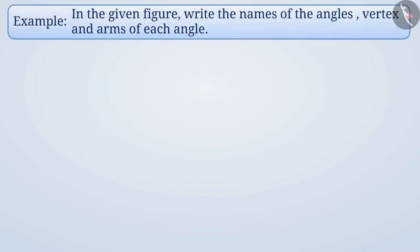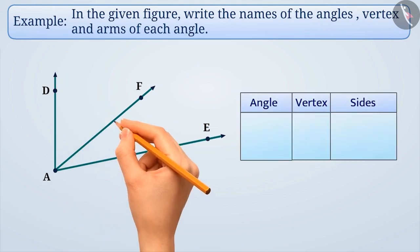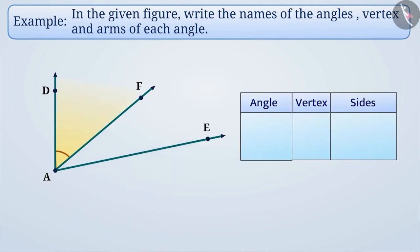Next example. In the given figure, write the names of the angles, vertex, and arms of each angle. Two rays with a common starting point make an angle. In the given figure, ray AD and ray AF make angle DAF. We can also call it angle FAD.